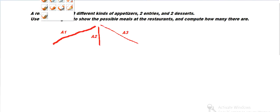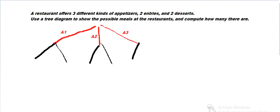And then for each of those, we've got two entrees. So someone can order A1 and then either of the two entrees. We label E1 and E2 for each appetizer branch.